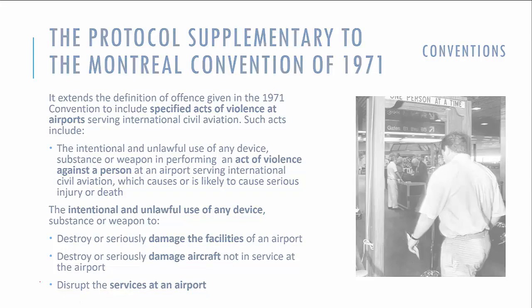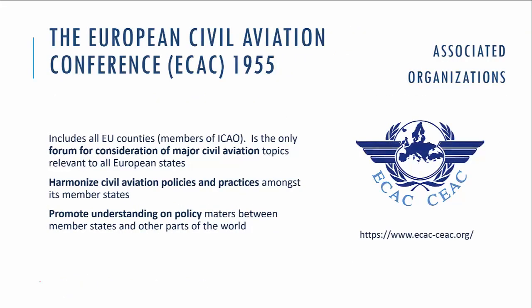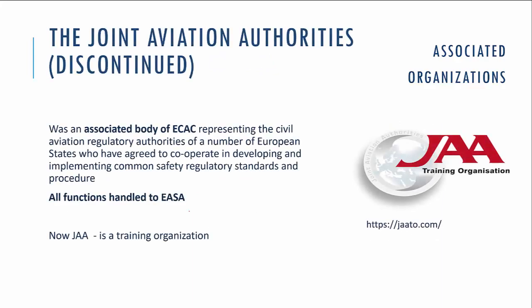Now let's turn to organizations related to ICAO. The European Civil Aviation Conference (ECAC), first held in 1955, is a forum focused on the harmonization of civil aviation policies and practices among European Union member states. It promotes understanding on policy matters between member states and other parts of the world. The Joint Aviation Authorities (JAA) was an associated body of the European conference focused on implementing safety regulation standards and procedures. The JAA is now just a training organization, with all functions transferred to EASA.